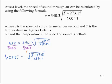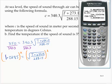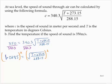Let's clear the radical by squaring both sides. If you still have 1.0285 in your calculator, just hit exponent 2 and hit enter. Take that number — 1.0578 — and that would equal (T plus 273.15) over 288.15.